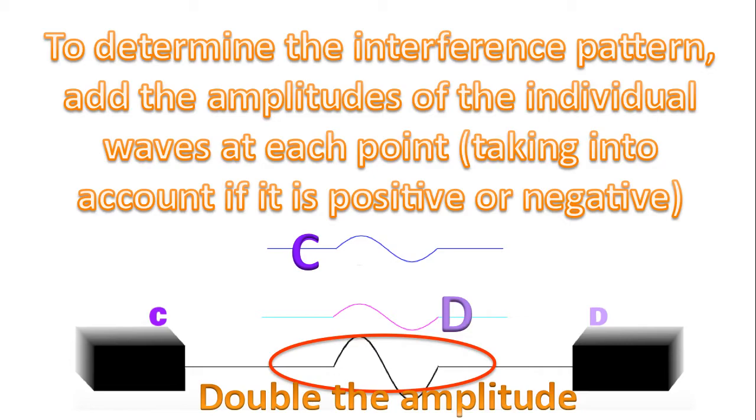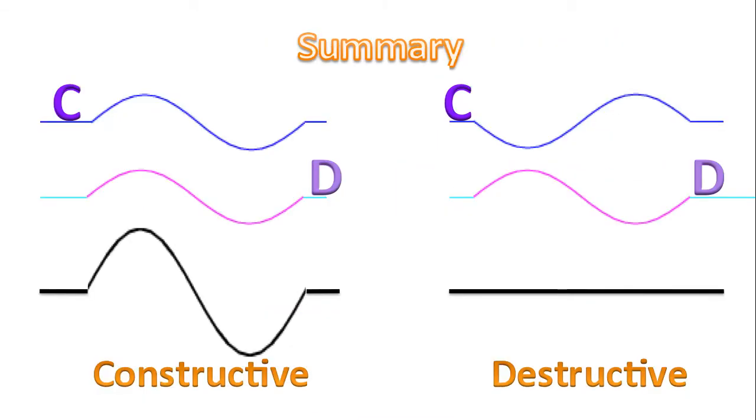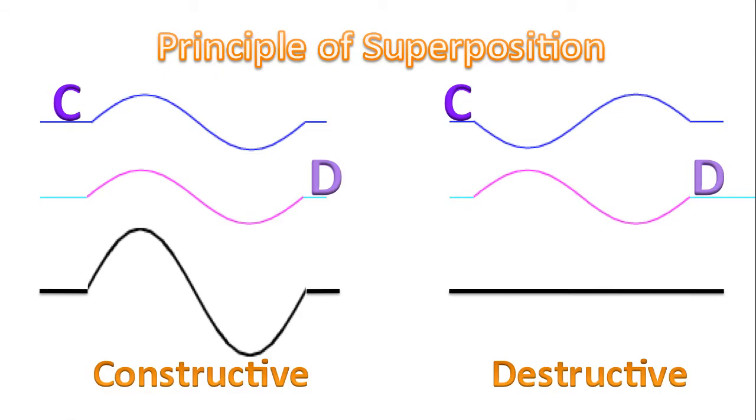To determine the interference pattern, we add the amplitudes of the individual waves at each point, taking into account if it is positive or negative. And so to summarize, we have constructive interference on the left side and destructive interference on the right side. The idea of adding waves or subtracting waves, this is called formally the principle of superposition.